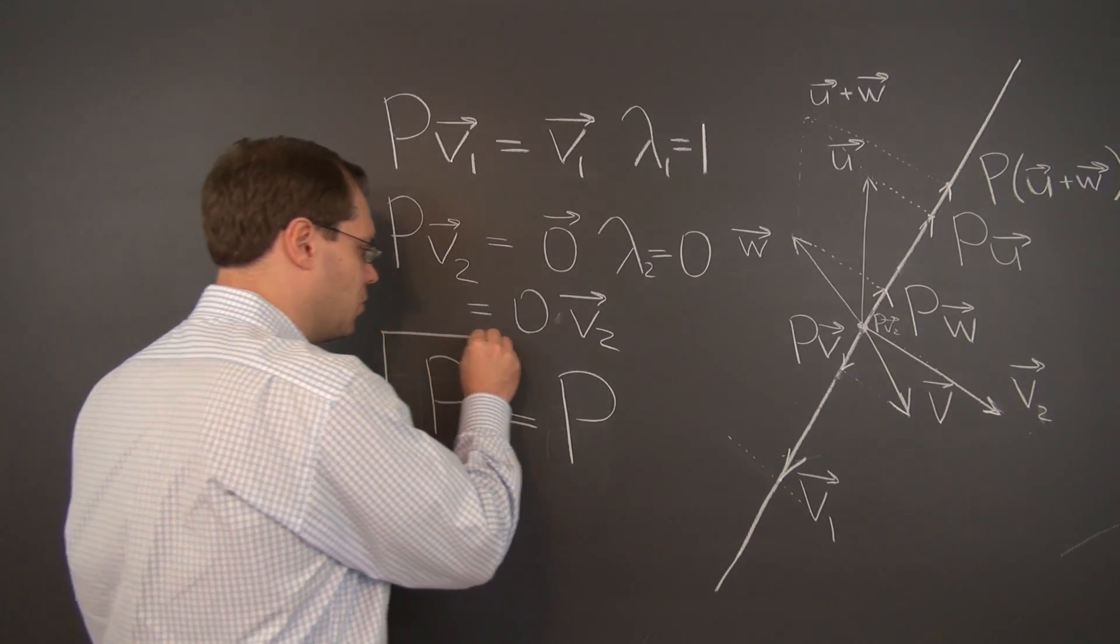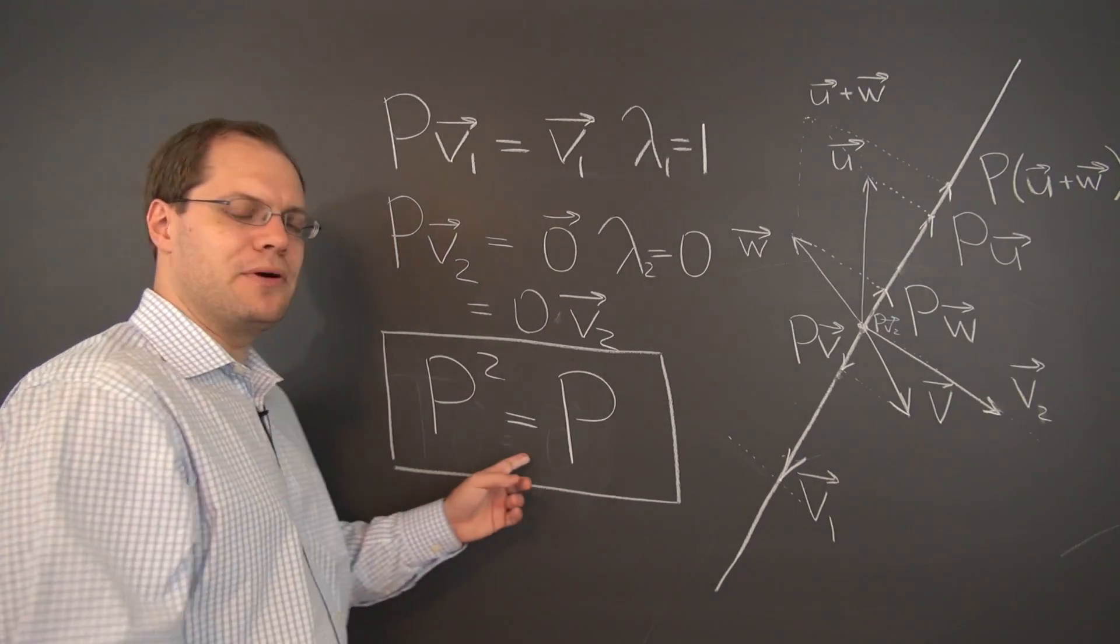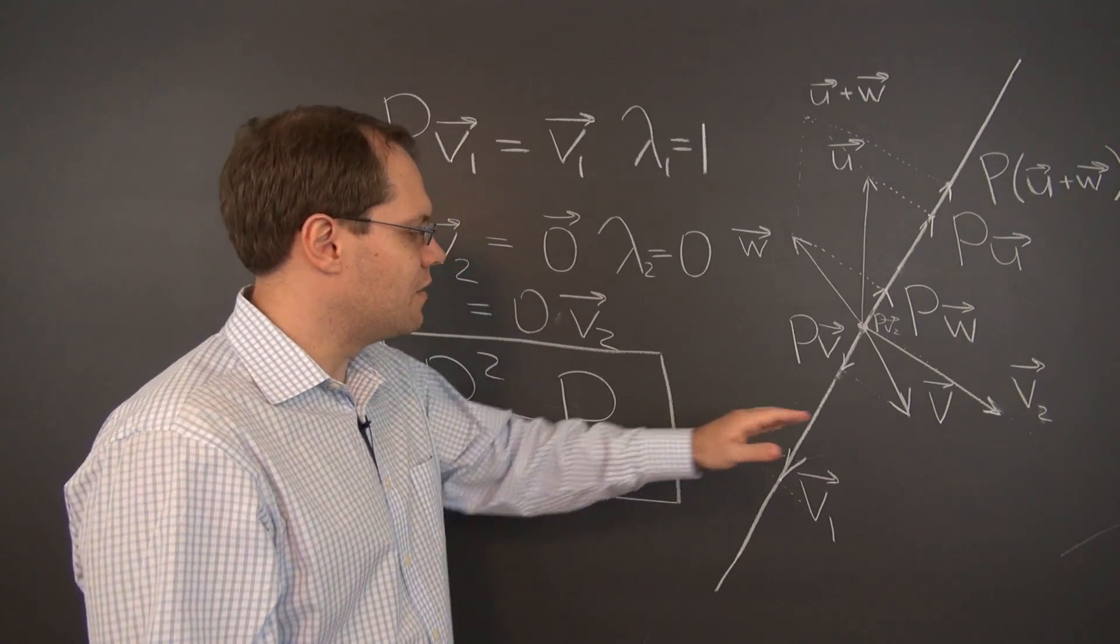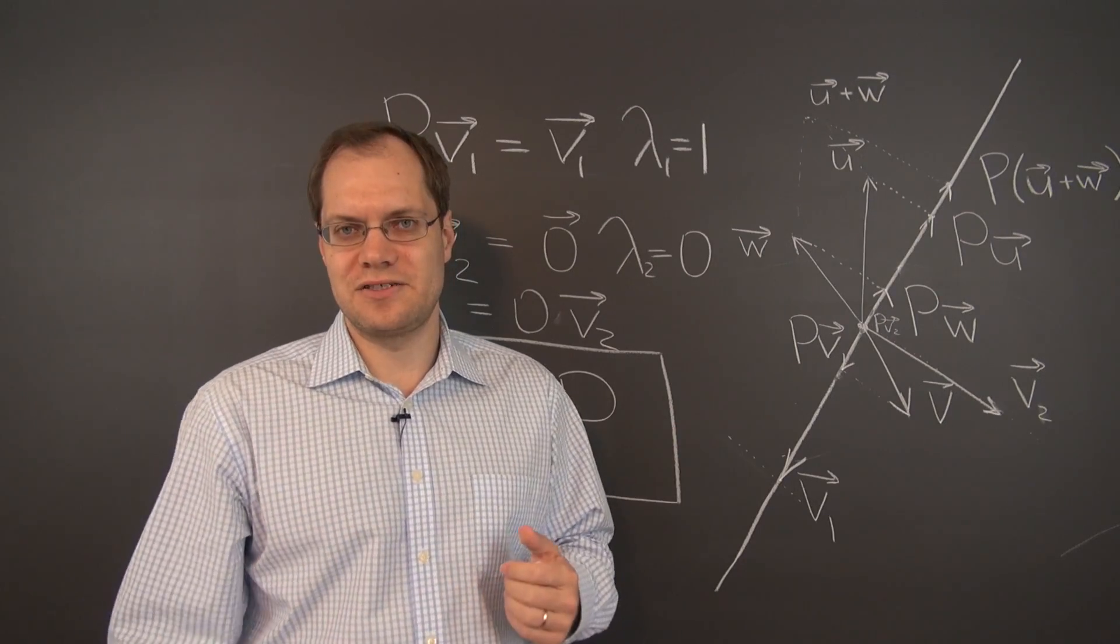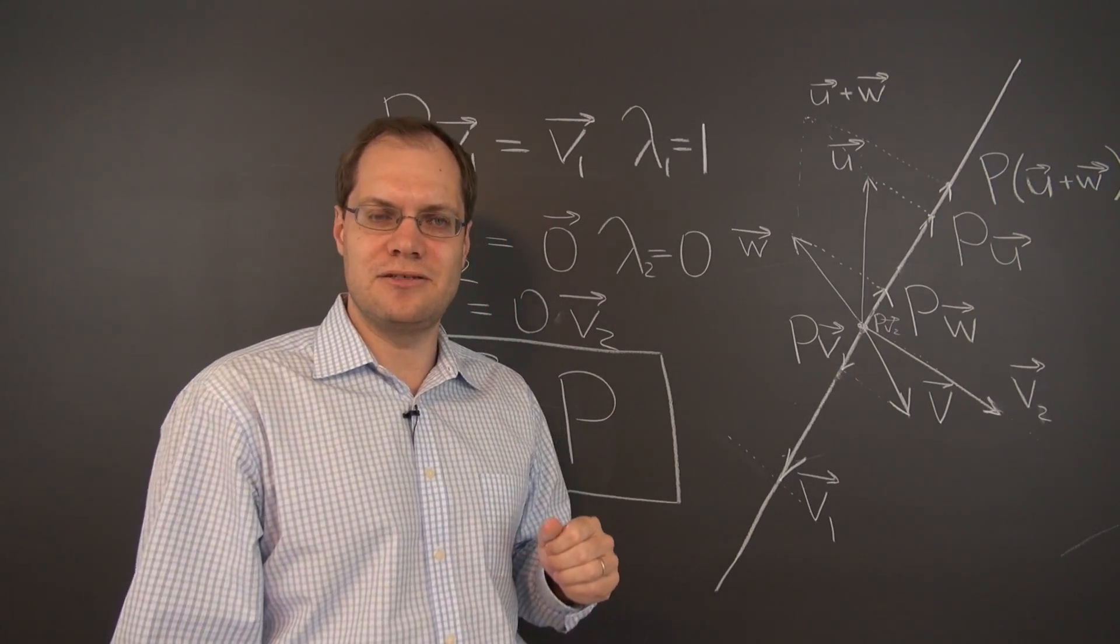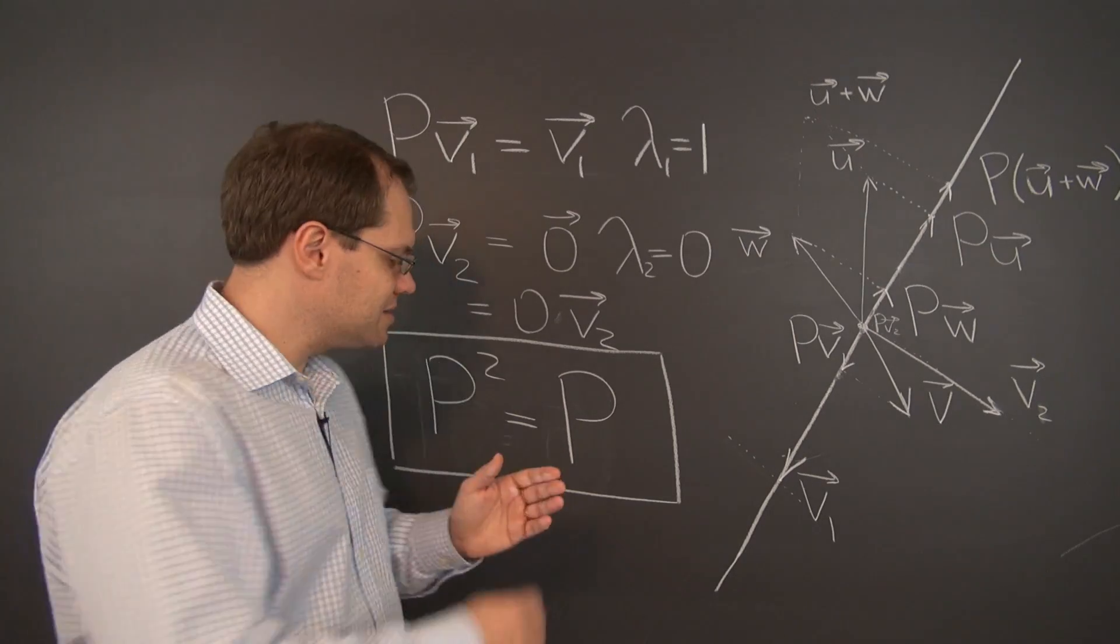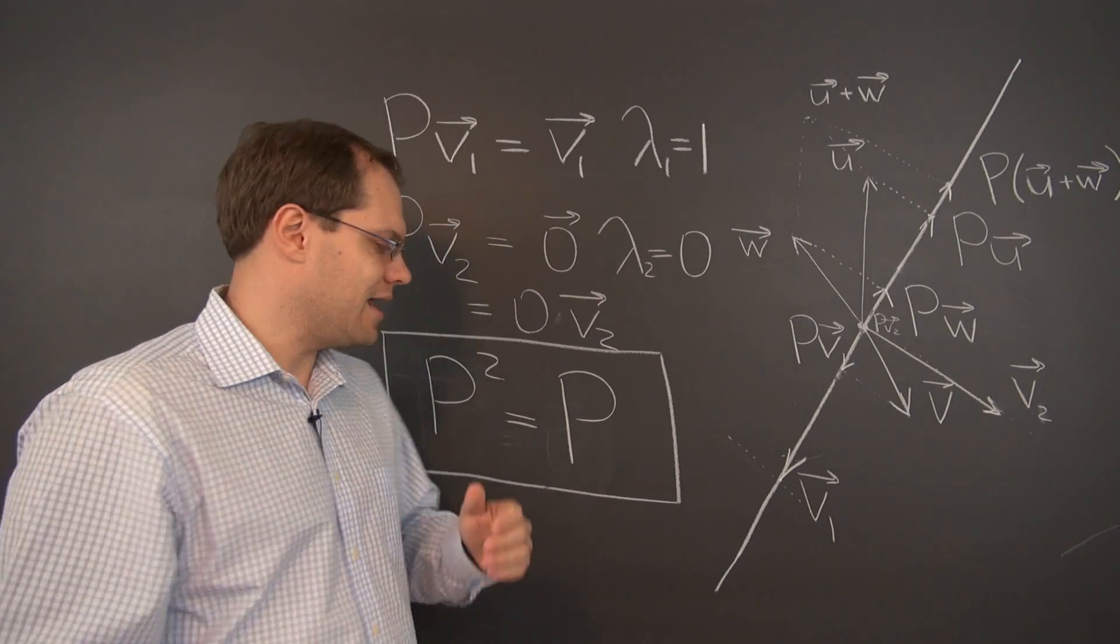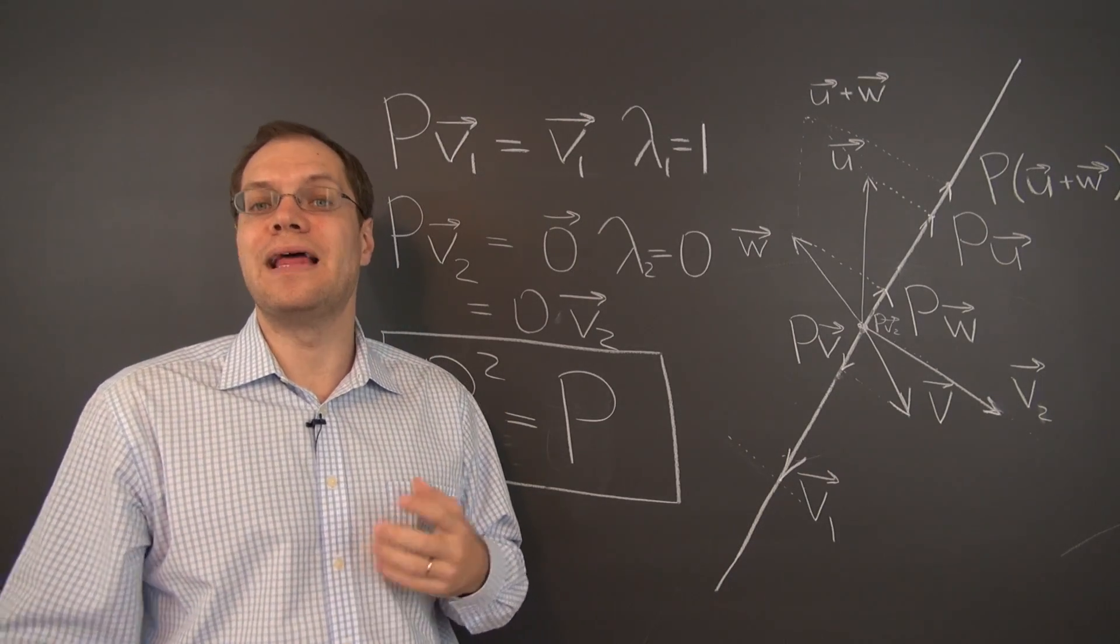This, by the way, when we go away from geometric vectors, any transformation that has this property will be called projection. And this is just another example of geometric vectors lending terminology to all other vector spaces. This, for us, is completely natural when it comes to this particular transformation. But then this algebraic equation is used as inspiration and is metaphorically carried over to much more general linear spaces. And any transformation that satisfies this property is called a projection.